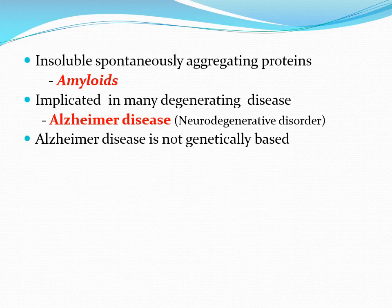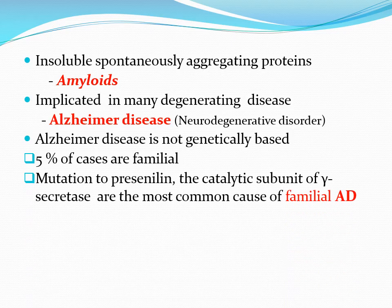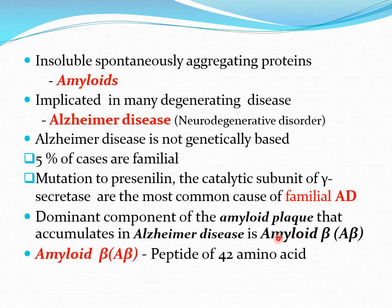Alzheimer's disease is not genetically based, although 5% of cases are familial. Mutations in presenilin, the catalytic subunits of gamma-secretase, are the most common cause of familial Alzheimer's disease. The dominant component of the amyloid plaque that accumulates in Alzheimer's disease is amyloid beta, which is an extracellular peptide of 42 amino acid residues.